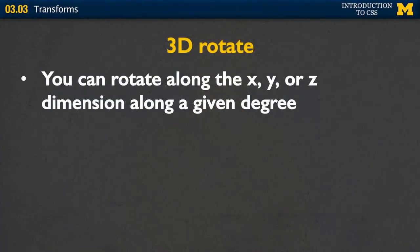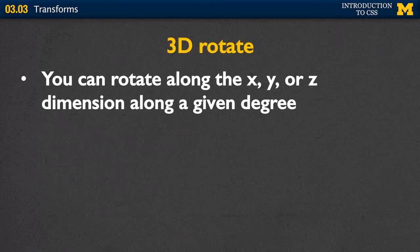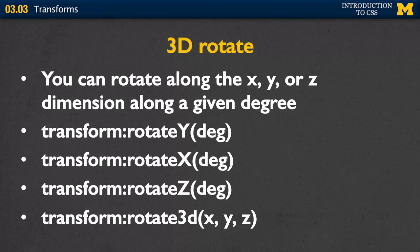The ones we just talked about were two-dimensional transforms. We can also do three-dimensional transforms, which are very similar. For instance with rotate, instead of just rotating along the x or y axis, we can also rotate around the z dimension as well. If you want to use a 3D rotate, your options are transform rotate Y, rotate X, rotate Z, or you can say rotate 3D and give it numbers along every single dimension.